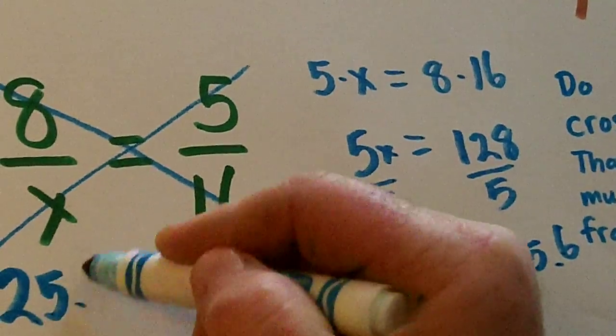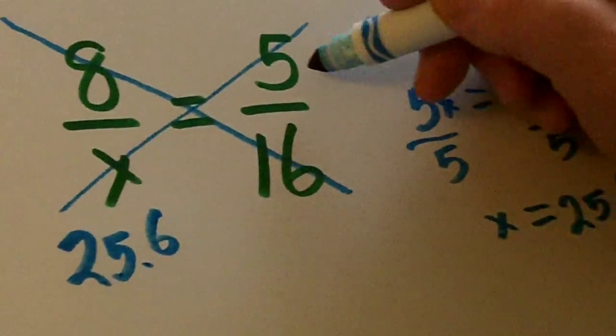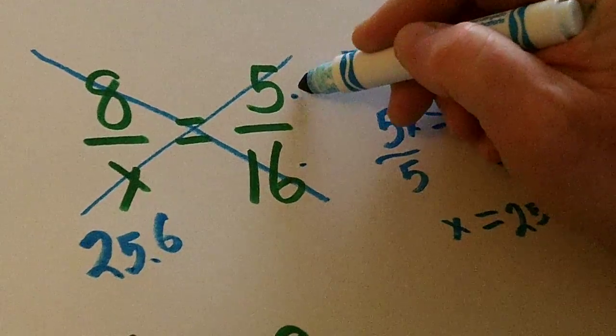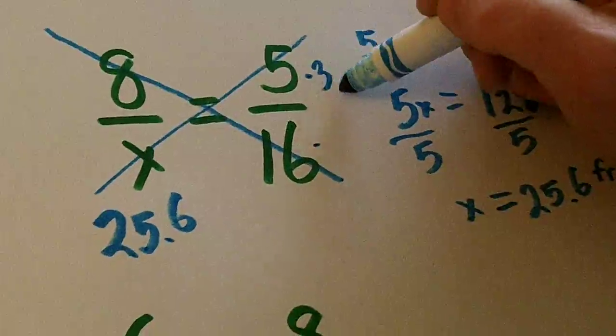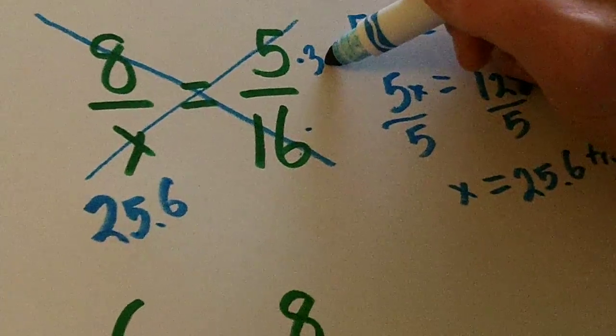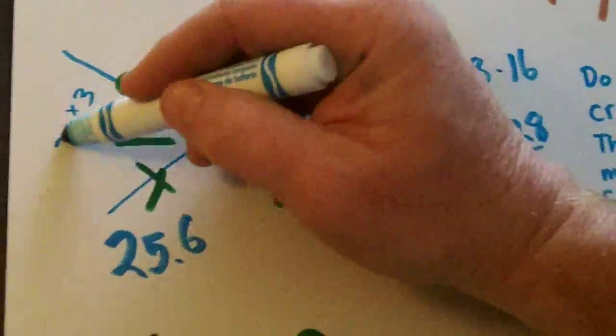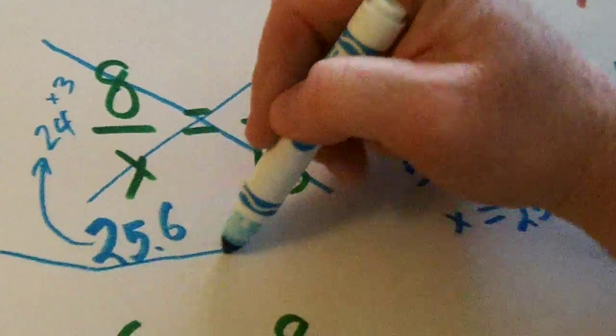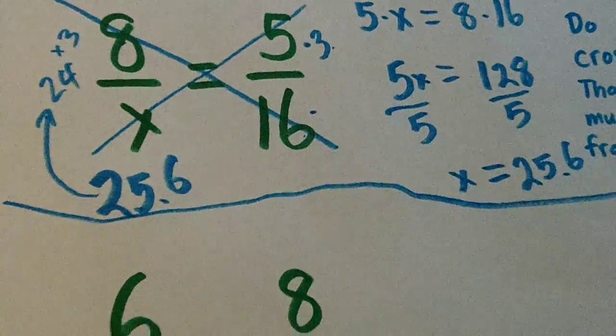Now let's see if this makes sense. 16 is a little more than 5 times 3. 5 times 3 is 15 and 16 is a little more than that. What's 8 times 3? It's 24 and this is a little bit above 24. So that answer makes good sense.